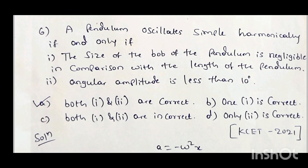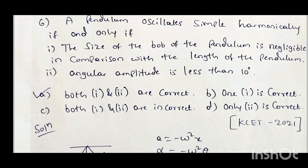Sixth question: a pendulum oscillates simple harmonically if and only if — condition 1: the size of the bob is negligible in comparison with the length of the pendulum; condition 2: the angular amplitude is less than 10 degrees. Options: A both 1 and 2 are correct, B only 1 is correct, C both 1 and 2 are incorrect, D only 2 is correct. This appeared in KCET 2021.